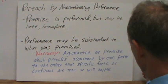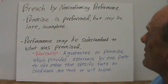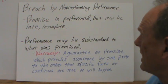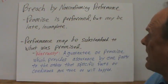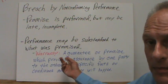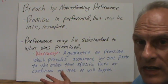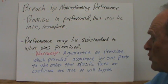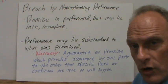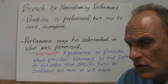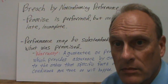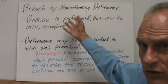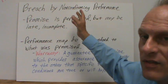Finally, the third category is breach by non-conforming performance. The promise is performed, but it's late or incomplete. Performance may be substandard to what was promised, in which case we're talking about a warranty. A warranty is a guarantee or promise that provides assurance by one party to another that certain facts or conditions are true or will happen — for example, 'this article is free of defect for three years.' You're making a representational warranty that it won't wear out in that period. So you can also have breach by non-conforming performance.